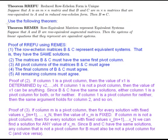This theorem here says row equivalent matrices represent equivalent systems. This is a theorem that we showed before - we showed many examples why this should be true. Suppose that A and B are row equivalent augmented matrices, then the systems of linear equations that they represent are equivalent systems. So you take one matrix and you perform row operations - whatever matrix you get will be equivalent, in other words, it will have the same solutions.